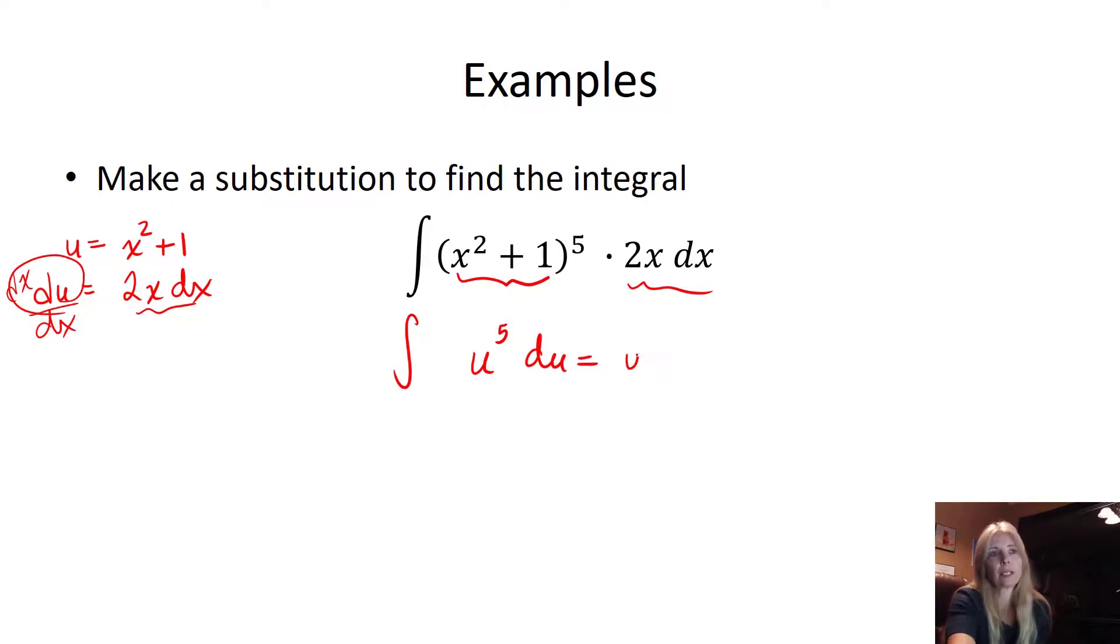And so where I see 2x dx, I put in du. Now I have something I know how to take the antiderivative of, because remember this business here. And of course, plus c, so I get u to the 6 over 6 plus c, and then don't forget - plug back in what you substituted, so u is x squared plus 1, and I get my answer.